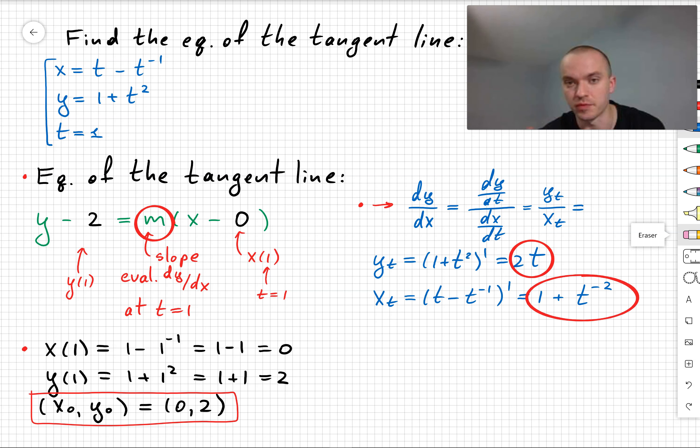Let's find y'(t) and x'(t) separately. Taking the derivative of y with respect to t, we obtain 2t. Taking the derivative of x with respect to t, we obtain 1 plus t to the power of negative 2.